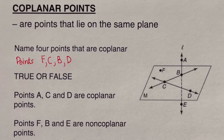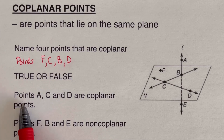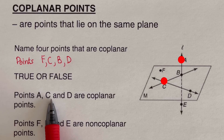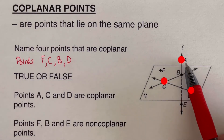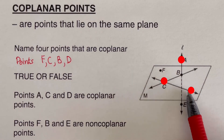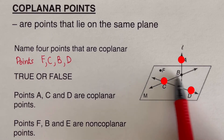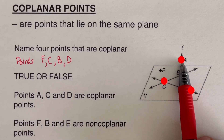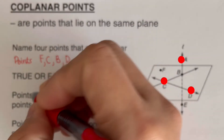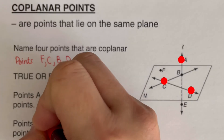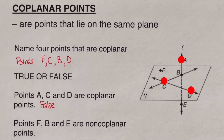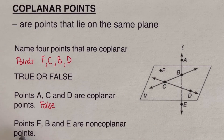Now let's determine if these statements are true or false. First: points a, c, and d are coplanar. Points c and d are sitting on the plane, but point a is on top of the plane. So this statement is false, because a is not coplanar with c and d. Try the next one on your own.